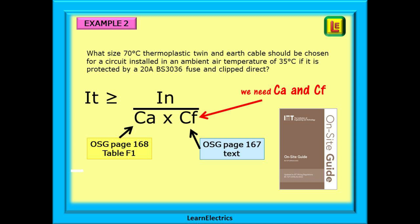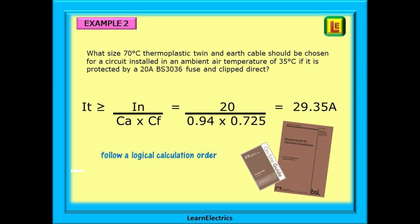CF, the fuse factor is only applied for BS3036 rewireable fuses and this is 0.725. This is because BS3036 fuses have a bigger fusing factor than other fuses and we need to allow for this. For all other fuses we use a factor of 1 which means that we can ignore it. Here is our calculation. 20 on the top and 0.94 multiplied by 0.725 on the bottom.